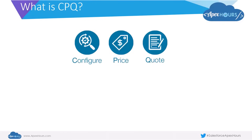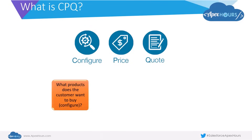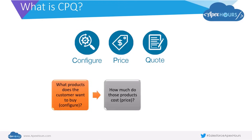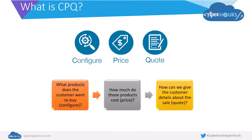So what is CPQ? CPQ stands for Configure, Price, and Quote. When we say Configure, the key question is: what products does the customer want to buy? For Price, the question is: how much do those products cost? And finally for Quote, the question is: how can we give the customer the details about the sale? This is where the Q part of CPQ comes into play.